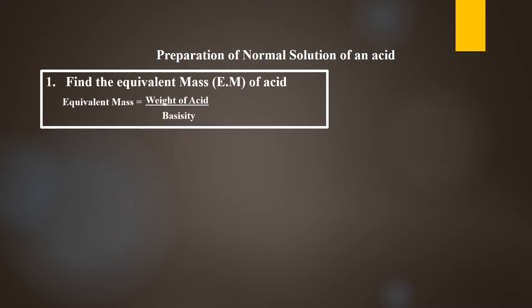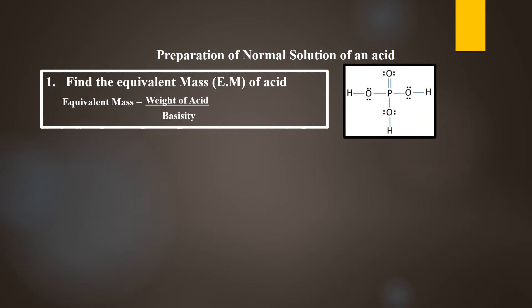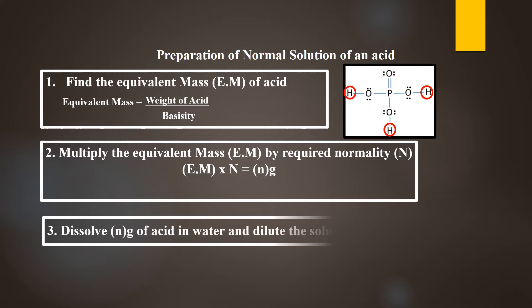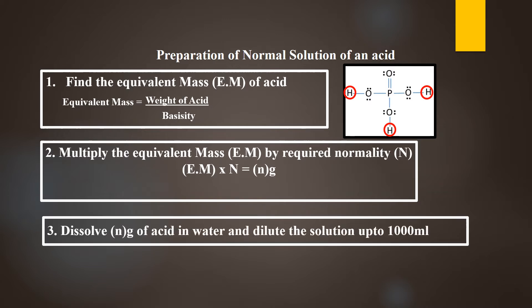In this video we will learn in detail with examples the preparation of normal solution of acids. To prepare a normal solution of any acid, always follow these three steps: first, find out the equivalent mass of acid by dividing its molecular weight with its basicity, where basicity is the number of replaceable hydrogen ions. Then multiply the equivalent mass by the required normality. Take the resulting mass of acid, dissolve it in water, and dilute the solution up to 1000 milliliters.